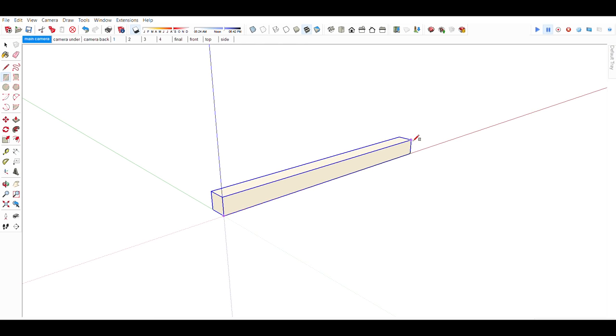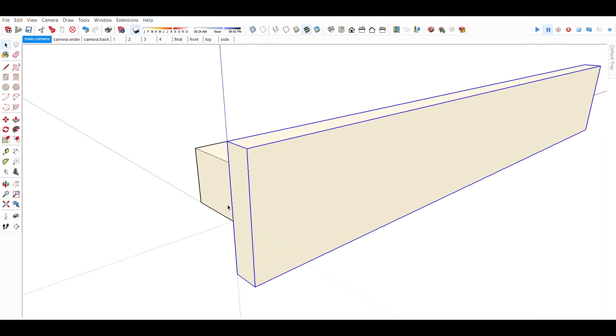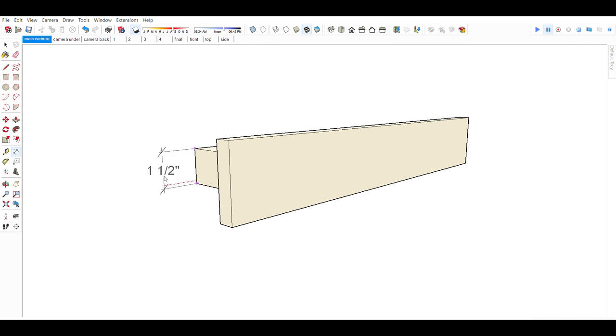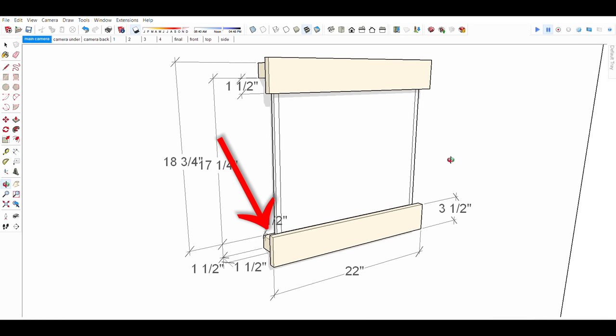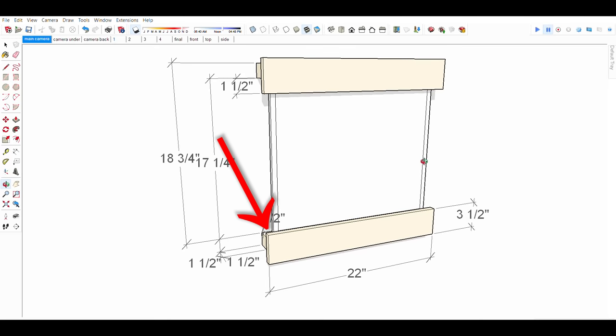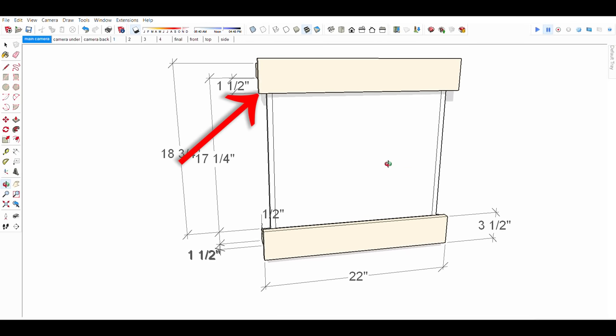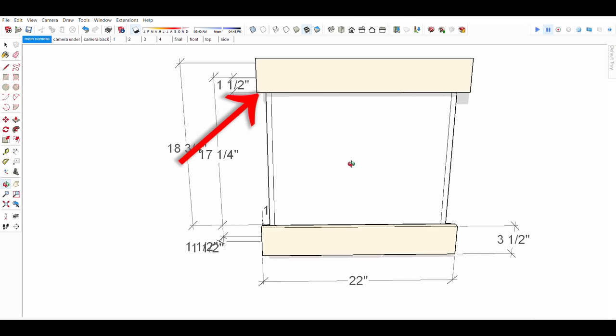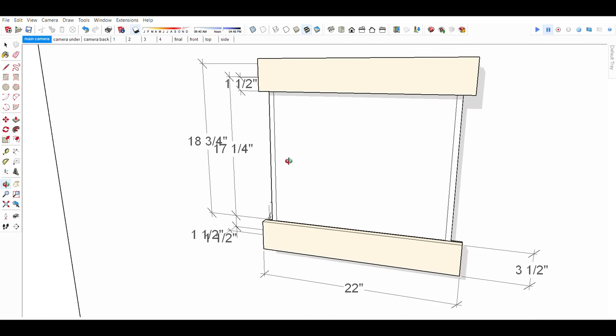So I jumped in SketchUp and started to build a 3D model of it so I can understand exactly how I wanted to put it together and what the dimensions are going to be. I do want to point out that there is a half an inch lip on the shelf where the bottom of the frame will sit and a one and a half inch lip that will hold the top of the picture frame when it's in place.